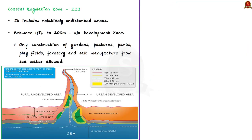CRZ 3 includes areas that are relatively undisturbed and do not belong to either CRZ 1 or CRZ 2. It is highlighted in red in the image and is subdivided into two areas. The first area is 200 meters landward of the high tide line, called the no development zone. Here, no construction shall be permitted except for gardens, pastures, parks, play fields, forestry, and salt manufacture from seawater.